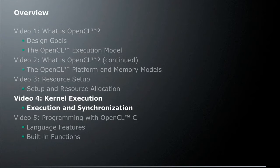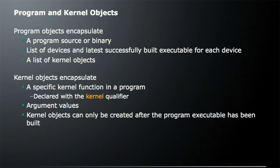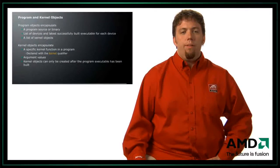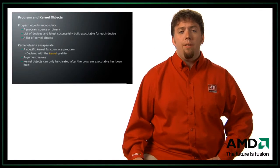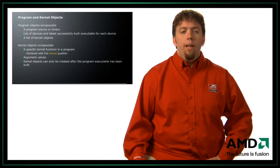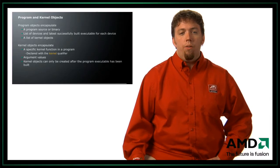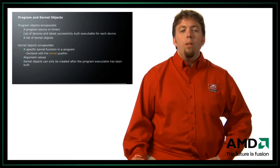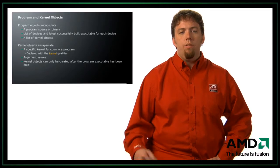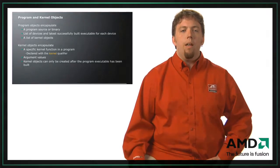We're going to be talking about execution and synchronization of kernels. Recall from previous videos, we've talked about program and kernel objects. Program objects encapsulate the program's source or pre-compiled binary from disk, a list of devices and the latest successfully built executable for each device, and a list of kernel objects. Kernel objects encapsulate a specific kernel function in a program declared with the kernel qualifier, and contain the argument values for that kernel. Kernel objects can only be created after the program has been built.